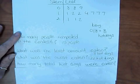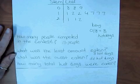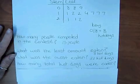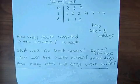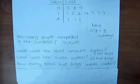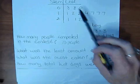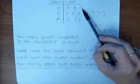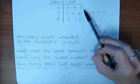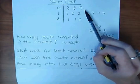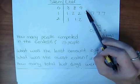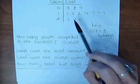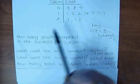How many total hot dogs were eaten? Well, we know 13 people ate them. One person ate 8, one person ate 8, another person ate 9, and so forth. So to find out how many hot dogs were eaten, we need to add up all these numbers.